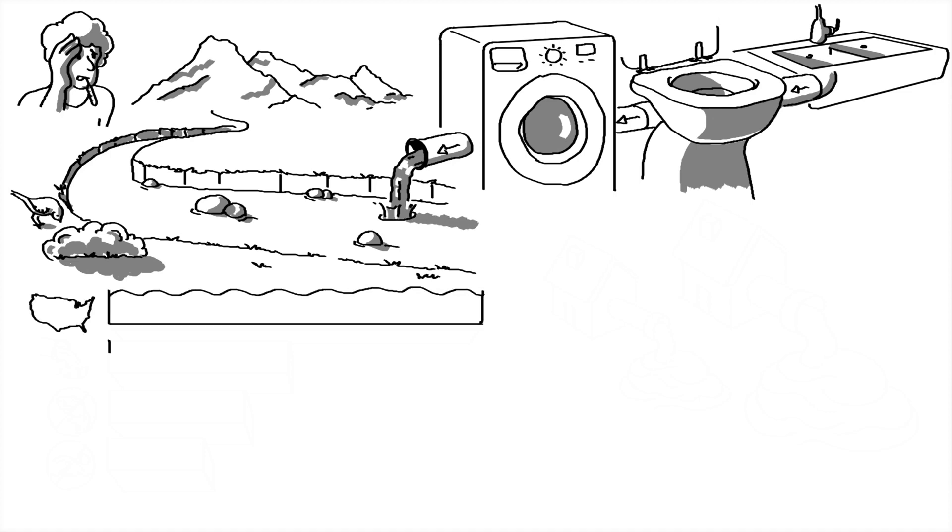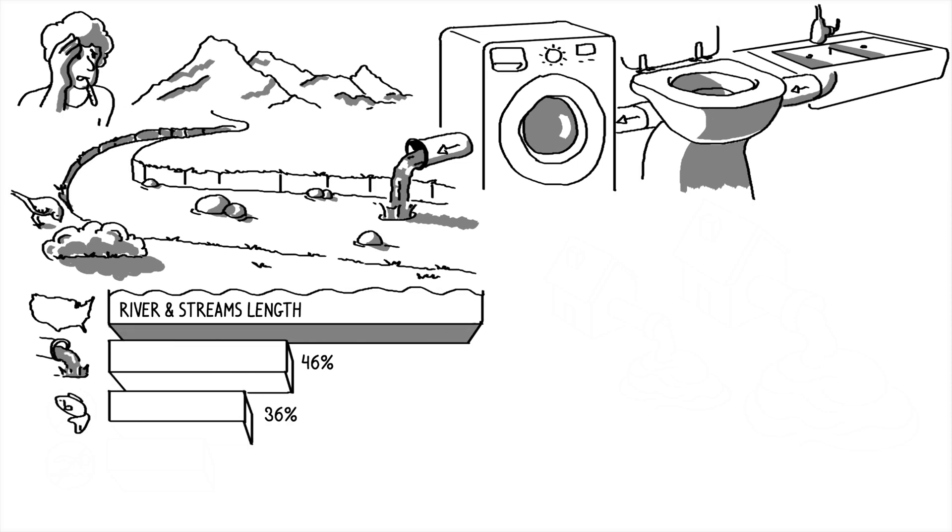In the United States, almost half of the nation's rivers and streams are in poor condition. 36% are unfit for use by fish and wildlife. 23% are unsafe for swimming and recreation.